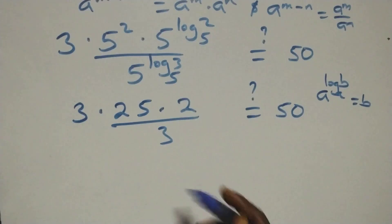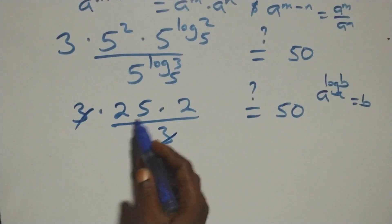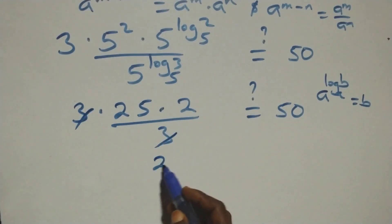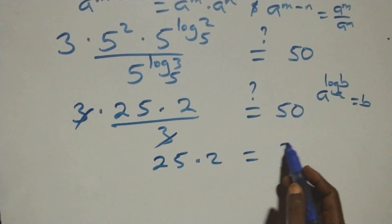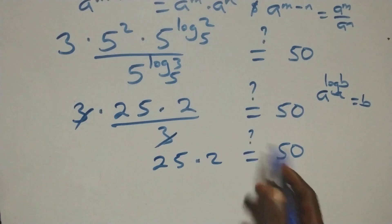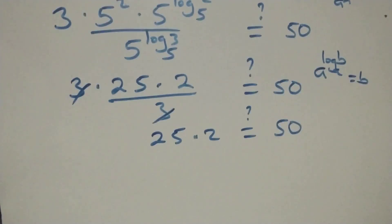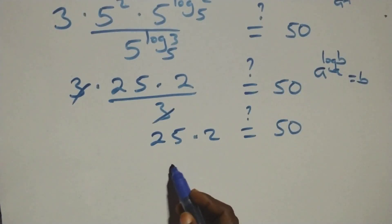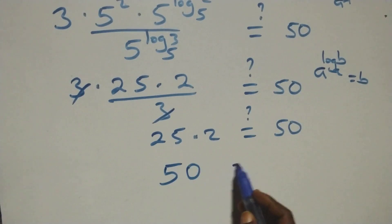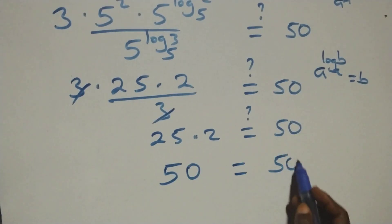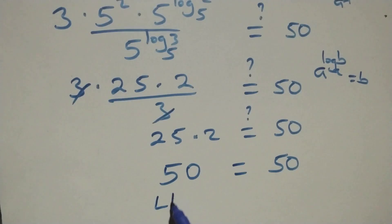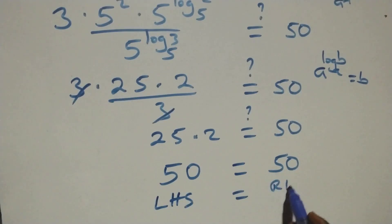The 3s cancel each other. We have 25 times 2, which is 50. So the left-hand side equals the right-hand side.